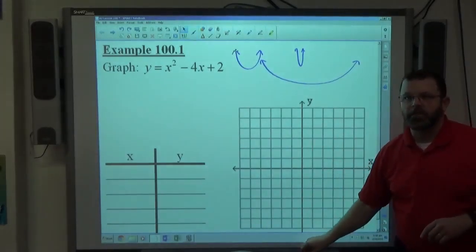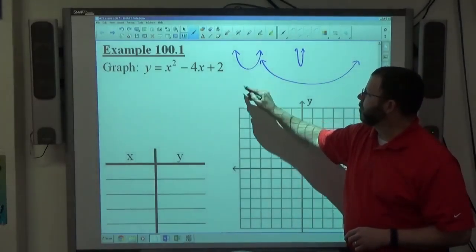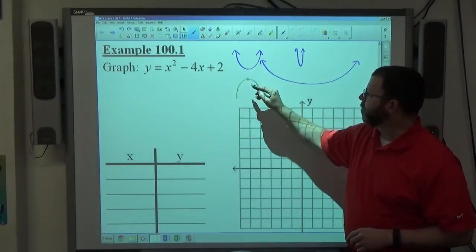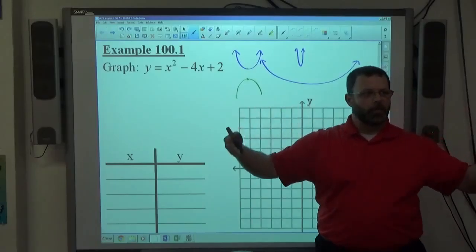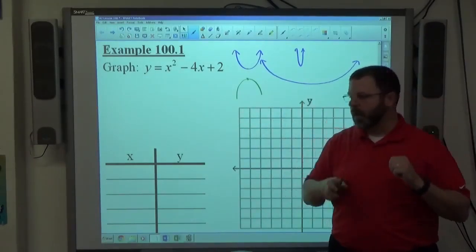What I'm going to give you today is enough information to find the bottom point, or the top point if it's turning this way, of the parabola. And then if you pick several other points on either side of that point, it'll give you the shape whether it's going down or up.